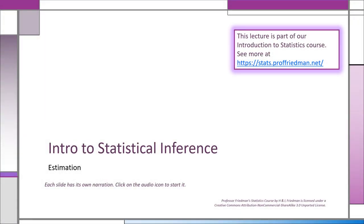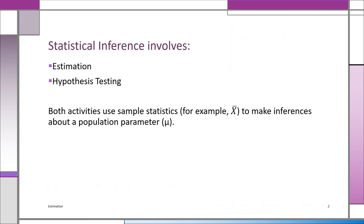Here is an introduction to statistical inference, in which we start looking at estimation. Hypothesis testing will be in another lecture. Statistical inference involves making inferences — drawing conclusions about population parameters based on sample statistics. We could be doing estimation, using a sample statistic like X-bar to draw conclusions about the population parameter mu, or testing hypotheses using sample evidence to test a hypothesis about a parameter.